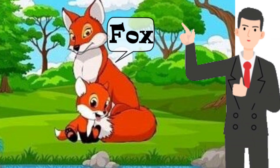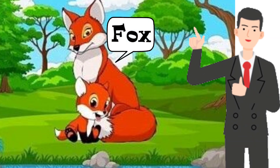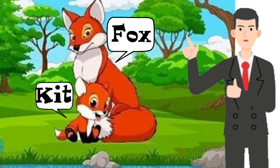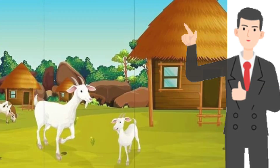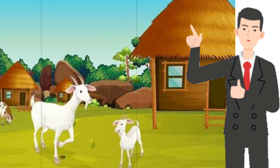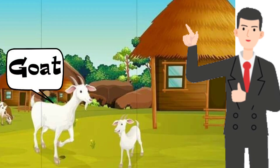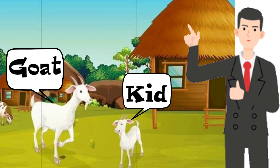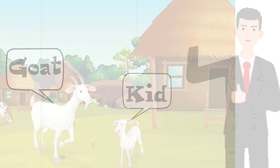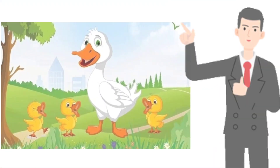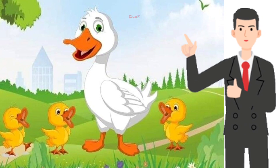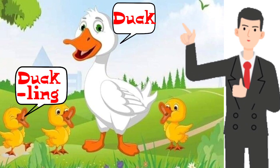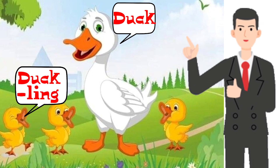This is Fox and this is Kid. Young one of fox is Kid. This is Goat and this is Kid. Young one of goat is called Kid. This is Duck and these are Ducklings. Young one of duck is Duckling.